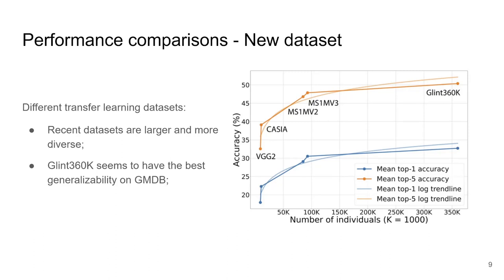Next, we had a look at the influence of using different transfer learning datasets. Recent face recognition datasets are much larger and more diverse with respect to ethnicity, age, and more. After some experiments, GLIN-360K seemed to have the best generalizability for our use case.